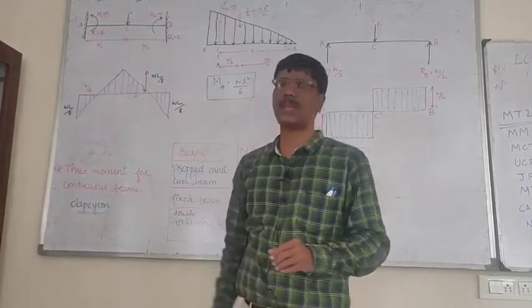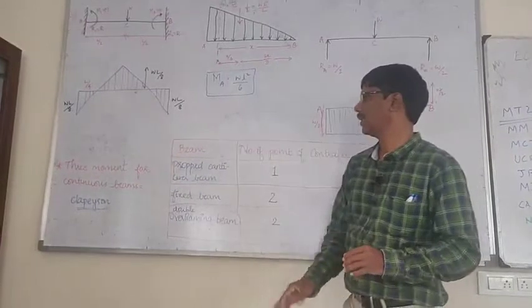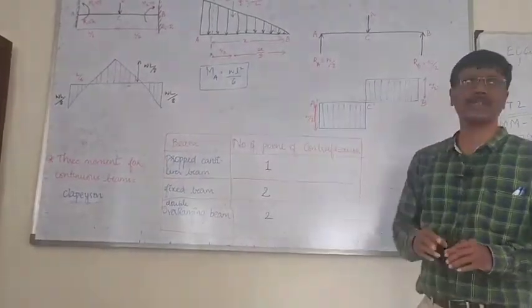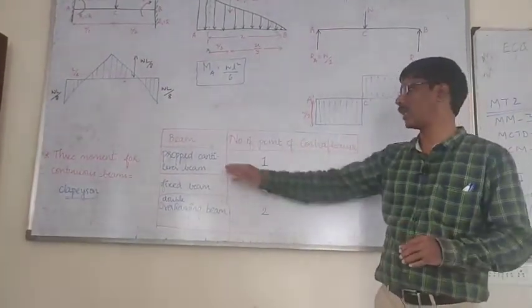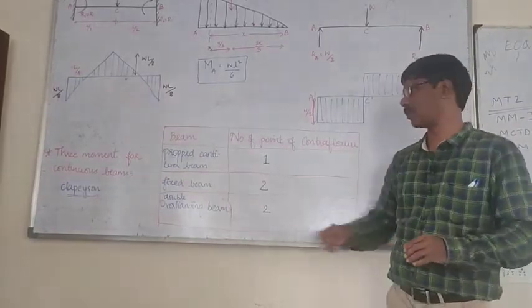That is, the moment for the fixed beam, it is given. The beam has number of points of contraflexure. The proper cantilever point of contraflexure is the number of points of contraflexure.